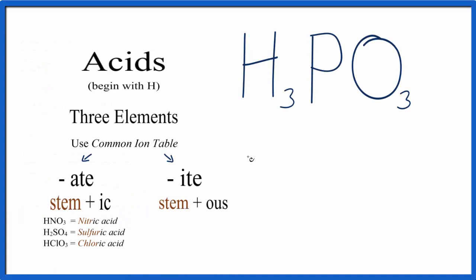So we write phosphite, and when we look at our flowchart, we see if we have ITE at the ending, we're going to take this stem, that's this part right here, replace ITE with OUS. So we get rid of the ITE, and we write OUS. Then we add the name acid, and we're almost there.